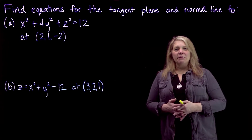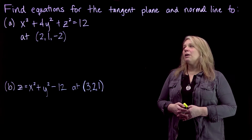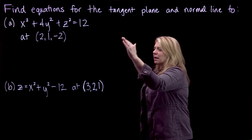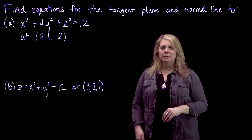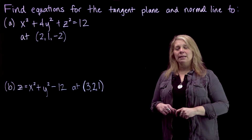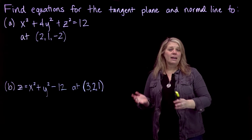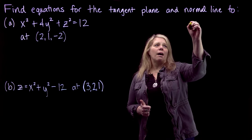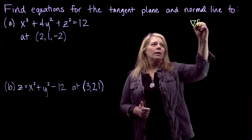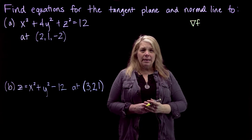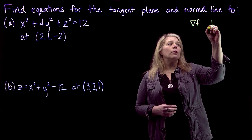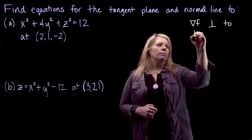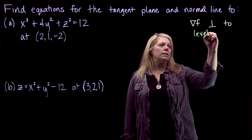We're going to look at a video where we find equations for a tangent plane and a normal line to a couple of different surfaces at specific points. The key here is remembering that a gradient of a function is perpendicular to level curves or level surfaces. In this case, we have surfaces.